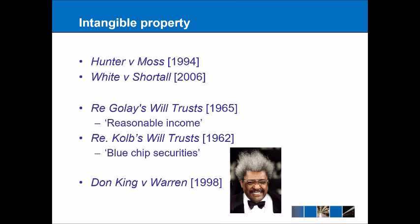In Re Gulbenkian's Will Trust 1965, a reasonable income was left to a housekeeper in a will. In 1965, the court held they could work out what a reasonable income for a housekeeper is, and the trust succeeded — partly because the court felt sorry for the housekeeper who would otherwise be left destitute. Realistically, if that case were decided today, a reasonable income would not be considered separately identifiable, since what one person considers reasonable would differ from another person's view. The amount of money is simply not separately identifiable in that sense.